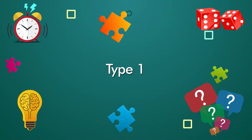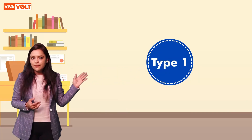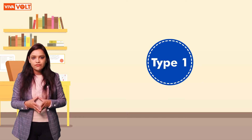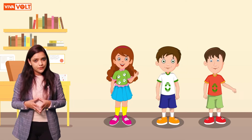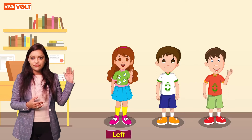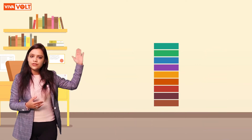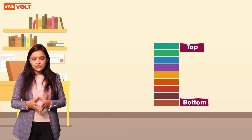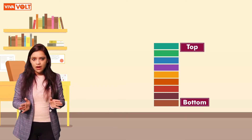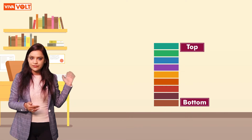Type 1. In this type of question, we have to find the position of an object or person from the left or right end, and rank from the top to bottom. If the end positions are not marked, we take our side as the left or right position.